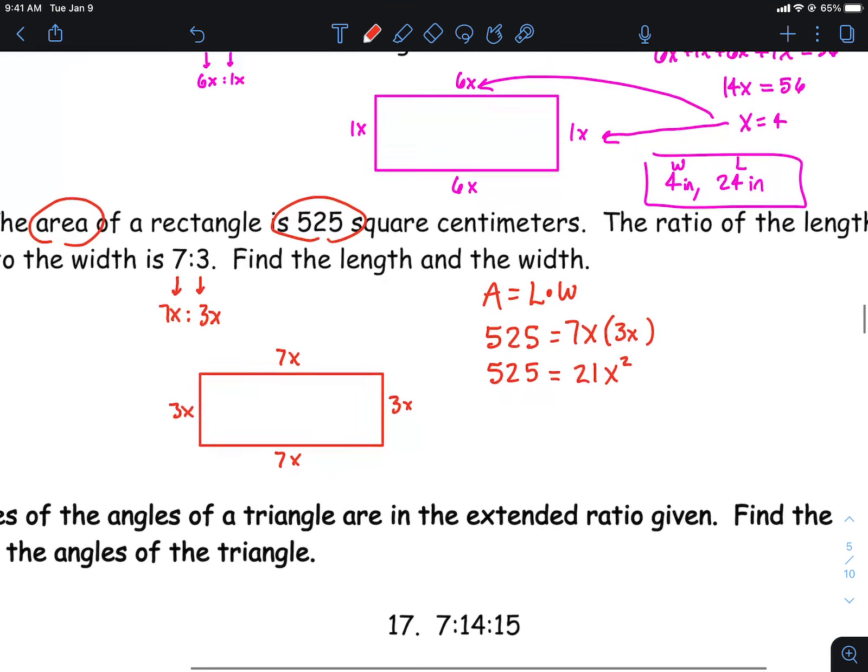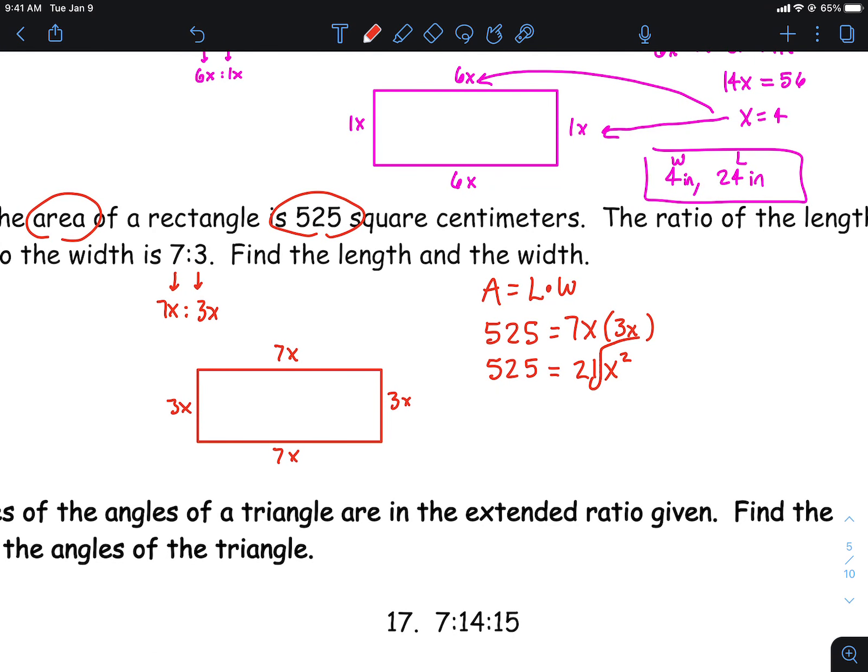Another area I'll see people mess up is they'll try and square root to get rid of the square there, which you do want to do eventually. But first, we want to get rid of this coefficient out in front, and it'll actually clean this up and make it much better. If you divide the 525 by 21, I think it's 25. Yep, that'll be x squared is 25.